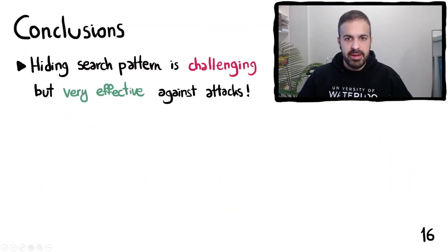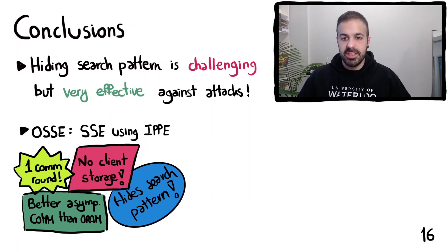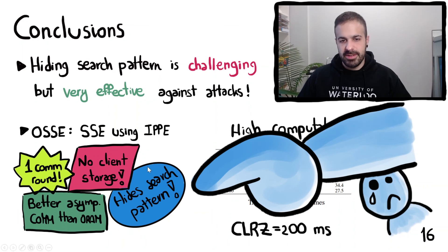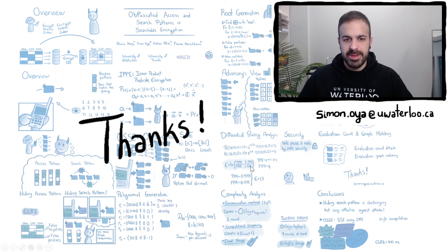To conclude, we have seen that hiding the search pattern is challenging but very effective against different state-of-the-art attacks. OSSC is a searchable symmetric encryption scheme using inner product predicate encryption that only requires one communication round, requires no client storage besides storing constants, hides the search pattern effectively against attacks, and achieves better asymptotic communication cost than 2RAM. The real downside of OSSC is its high computational cost — for a server with 160 cores it takes around half an hour to run a single query, while CLRC does the same in around 200 milliseconds. One of the biggest contributions of this paper is the idea of generating query tokens randomly with fresh randomness every time, and hopefully future schemes can do this much faster. Thank you and we'll be happy to take questions.